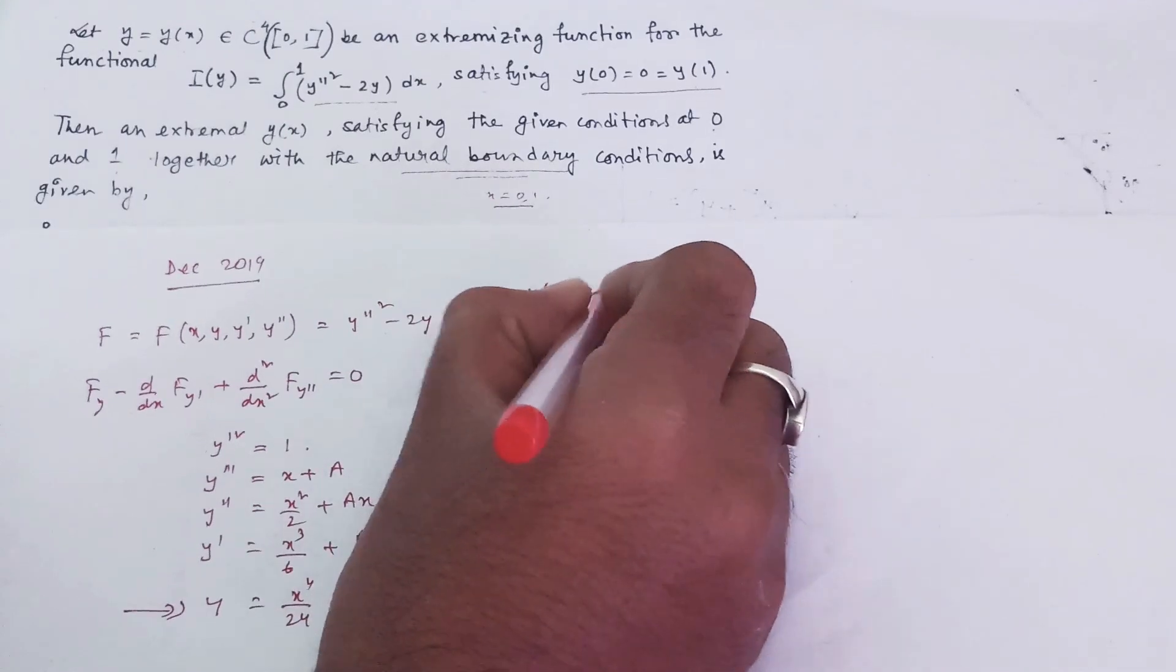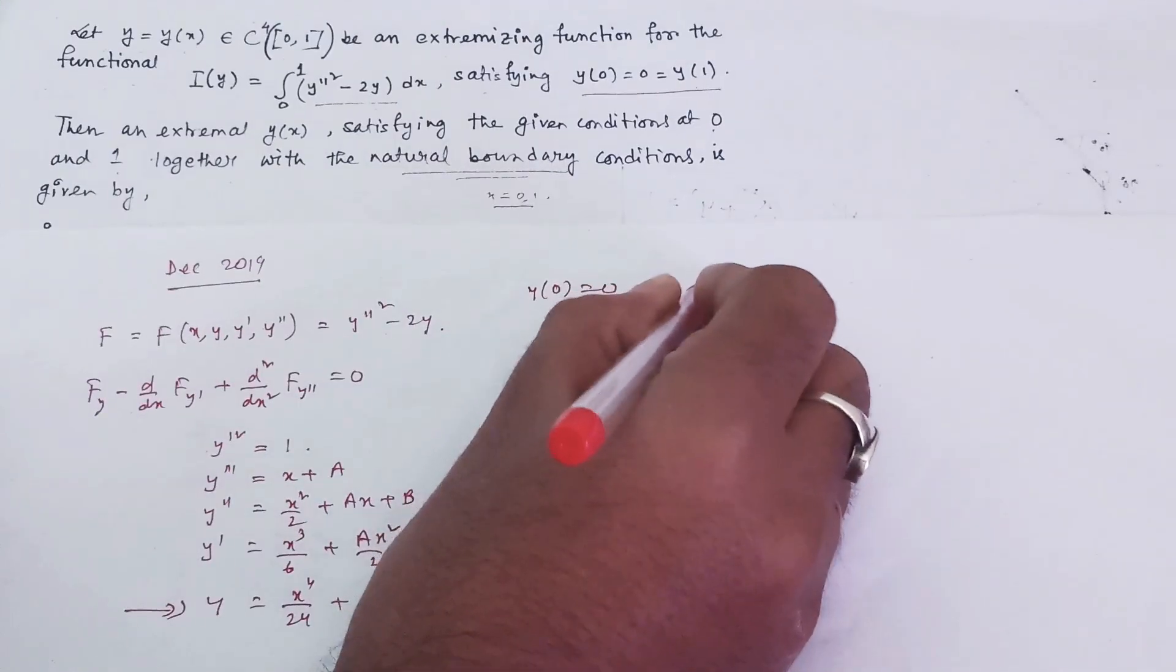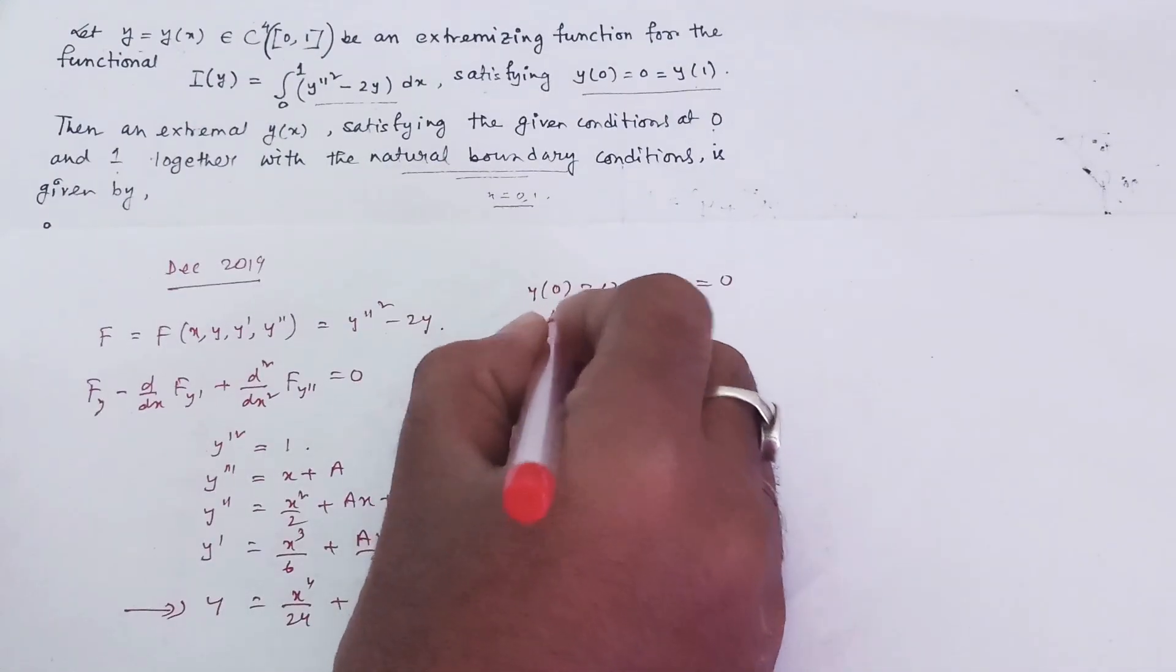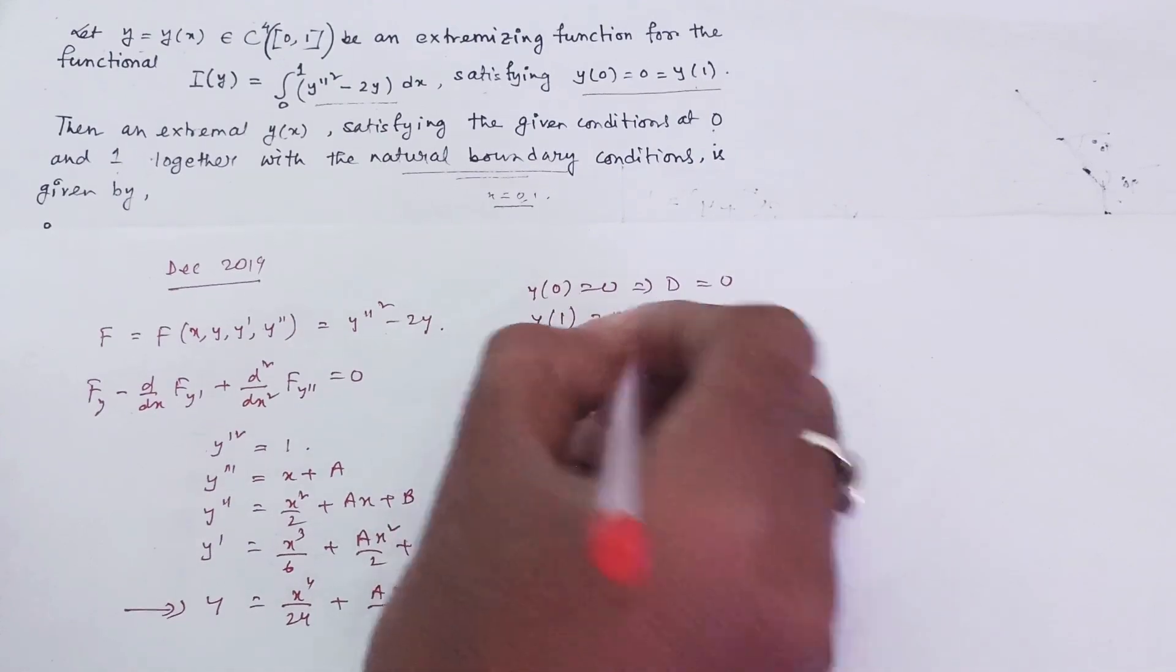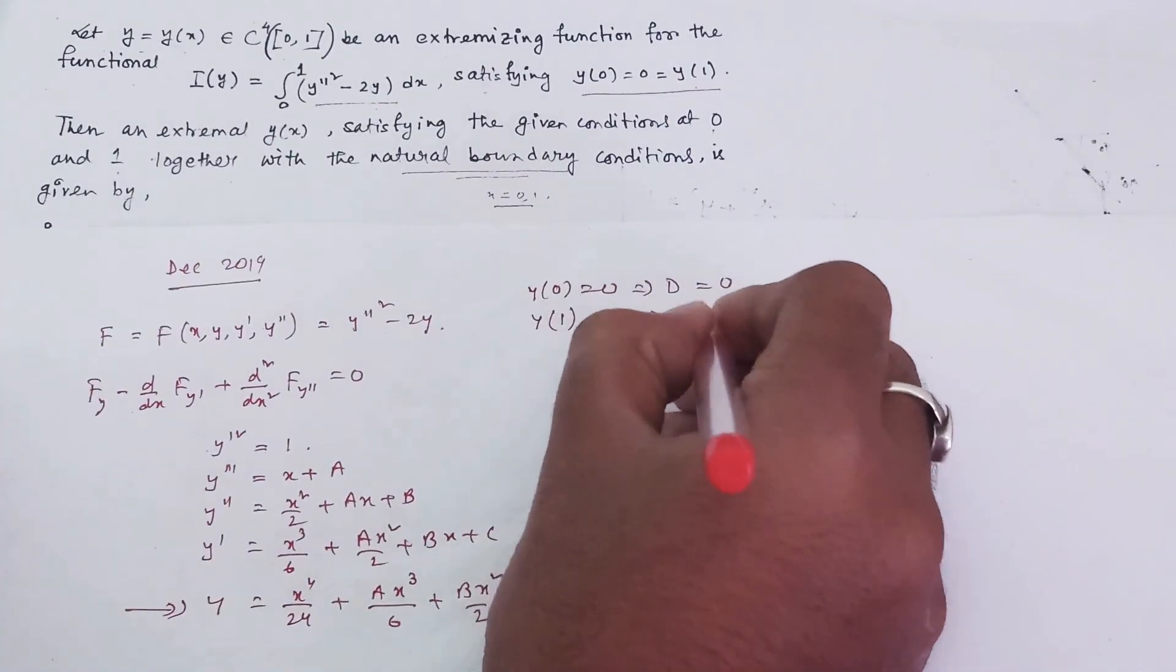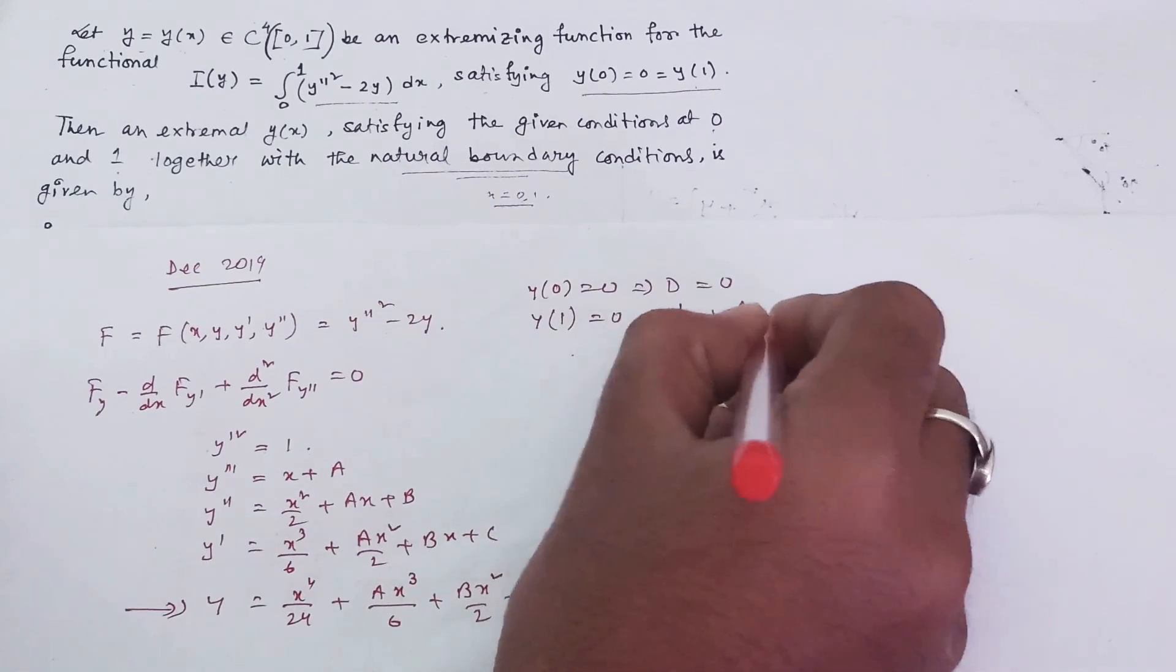Now use the given condition y(0) = 0, which gives D = 0. Then y(1) = 0 gives 1/24 + A/6 + B/2 + C = 0.